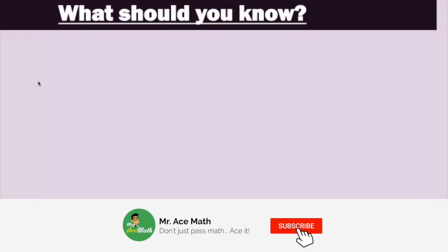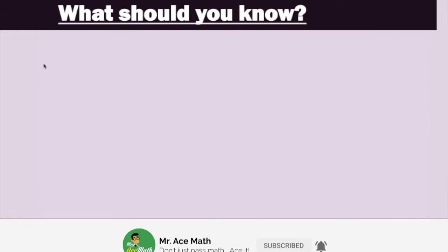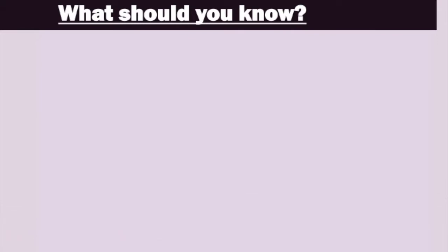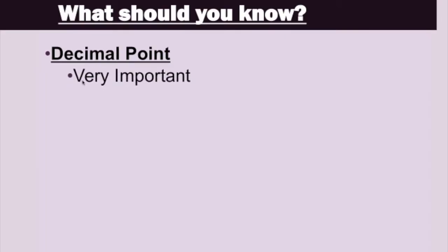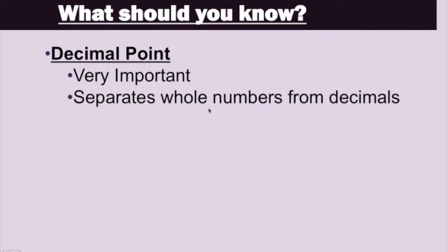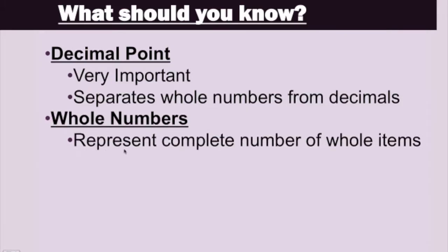Before we get into the real heart of this lesson, you should definitely make sure that you have a great understanding of the following things. Decimal points — remember that a decimal point is very, very important because it separates whole numbers from decimals. Whole numbers represent complete numbers of whole items. For example, 10 stars or 20 apples, not 0.5 apples and not 0.25 stars. They are complete whole items.